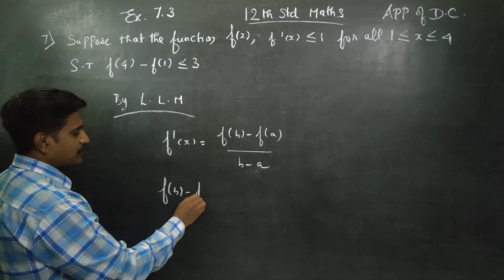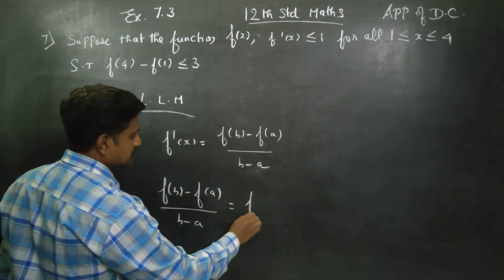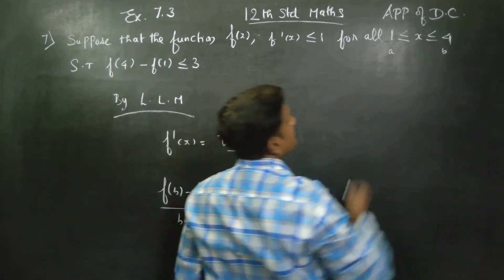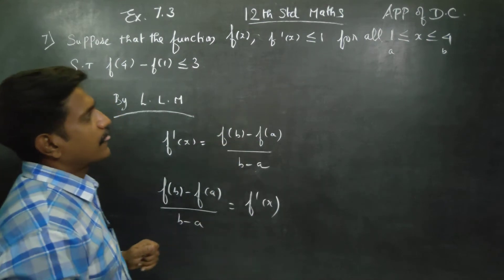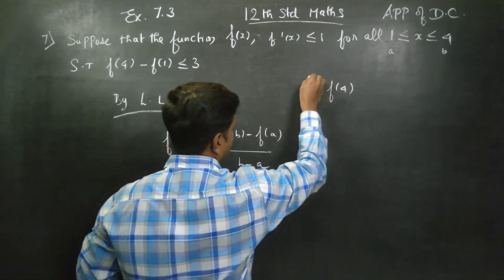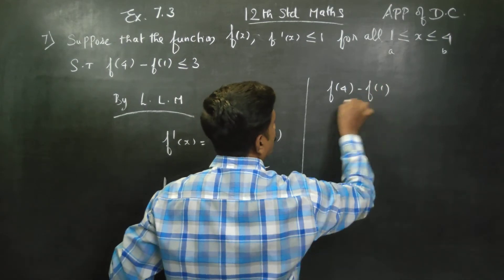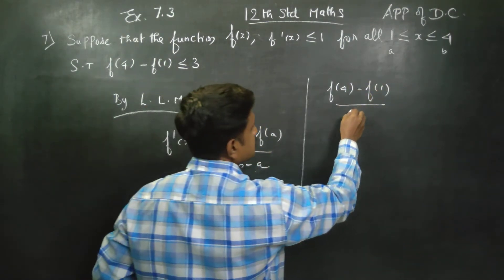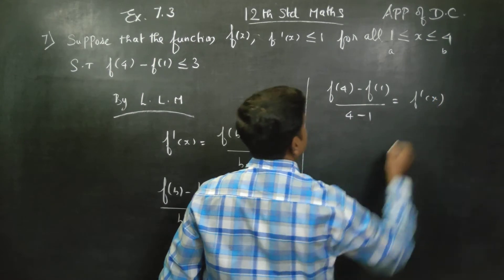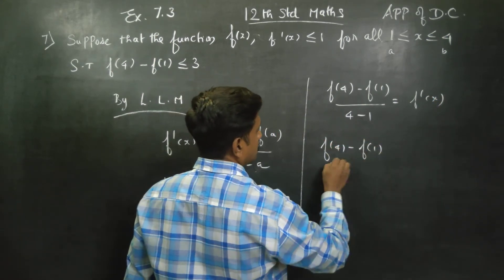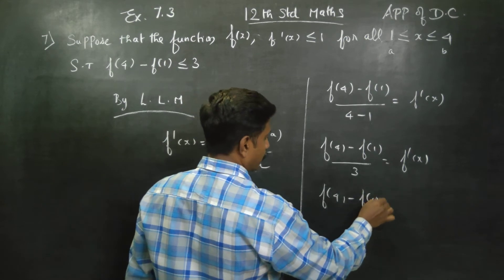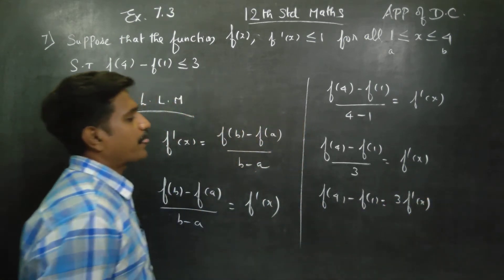So f(b) minus f(a) can also be written as f'(x) times (b minus a). Here, the interval is [1, 4], so a equals 1 and b equals 4. Substituting: f(4) minus f(1) divided by b minus a, that is 4 minus 1, is equal to f'(x). So f(4) minus f(1) divided by 3 equals f'(x). Cross-multiplying: f(4) minus f(1) is equal to 3 times f'(x).